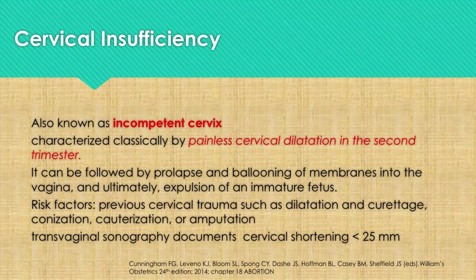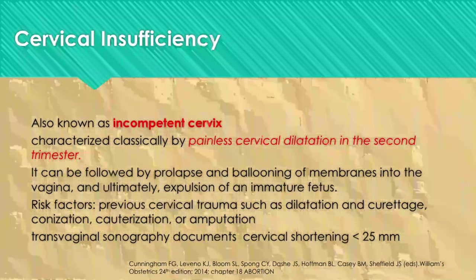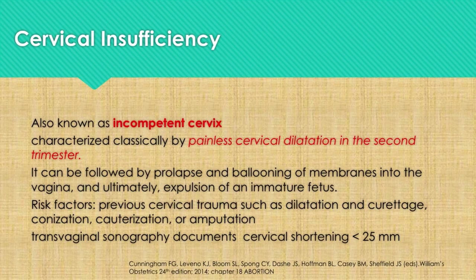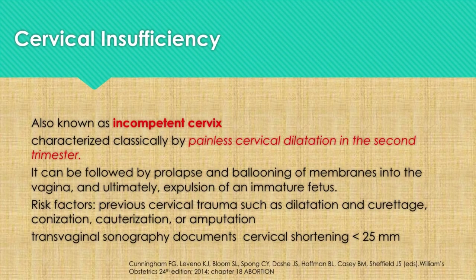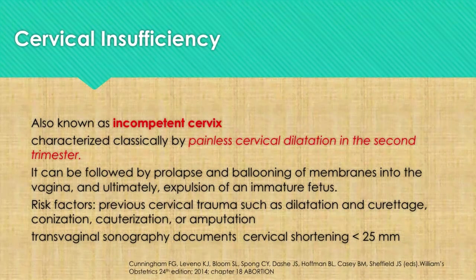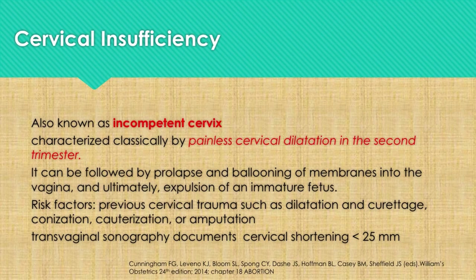Cervical insufficiency, also known as incompetent cervix, is one of the more common causes of repeated abortion or recurrent pregnancy losses. It is characterized classically by painless cervical dilatation during the second trimester, followed by prolapse and ballooning of the membranes into the vagina and ultimately expulsion of an immature fetus. Risk factors include previous cervical trauma such as dilatation and curettage, conization, cauterization, or amputation. Transvaginal sonography documents cervical shortening of less than 25 mm or less than 2.5 cm.